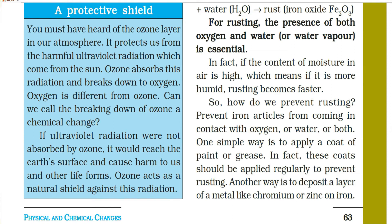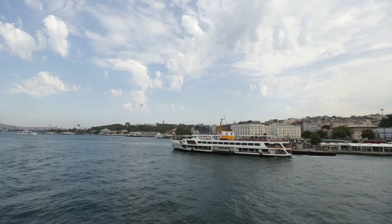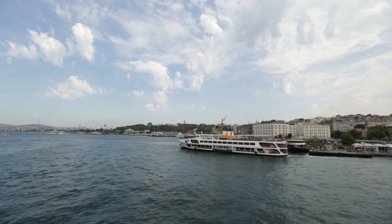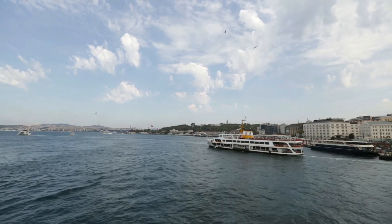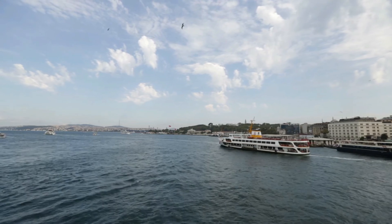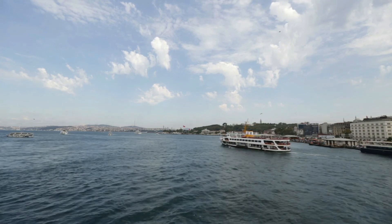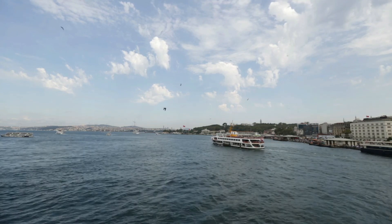This process is called galvanization. The iron pipes used in our homes to carry water are galvanized to prevent rusting — they are made of iron but have a layer of zinc on them. Ships are also made of iron: part of them remains underwater, and water drops cling to the outer surface above water, causing a huge monetary loss due to rusting.